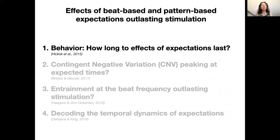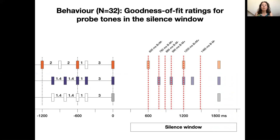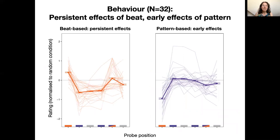First, we performed a behavioral experiment. We presented participants with probe tones in the silence period, and the timing of the probe tones, depicted here in the red dotted line, varied systematically. Some coincided with expected moments based on the beat, here are the light orange bars, and some coincided with expected moments based on the pattern, here are the light purple bars. Participants rated how well the probe tones fitted the preceding rhythm.